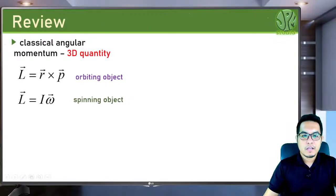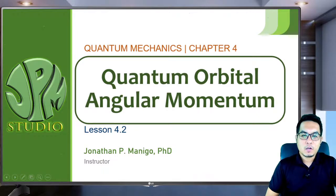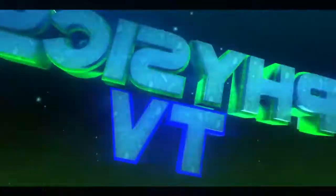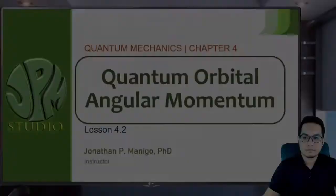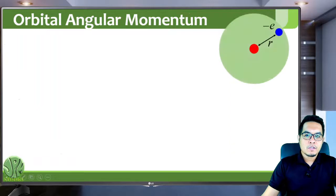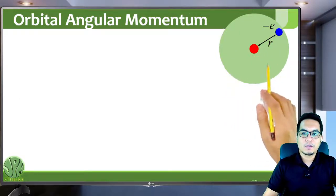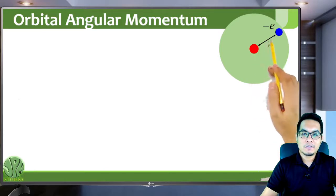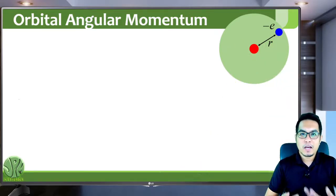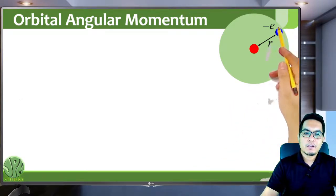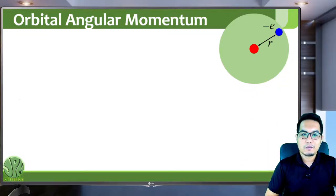For this lesson, we will be talking about the quantum version of the orbital angular momentum. In quantum mechanics, an electron has both a spin angular momentum and an orbital angular momentum, similar to the analogy about the Earth. The electron orbits around the nucleus, so it has a position or distance r from the nucleus and a momentum p, therefore it will have an angular momentum of r cross p. But it is also spinning on its own axis, so it also has a spin angular momentum.